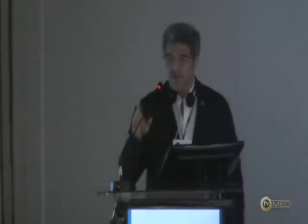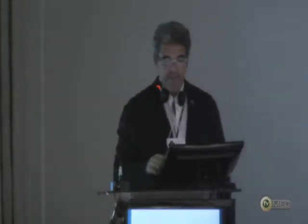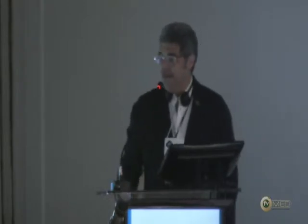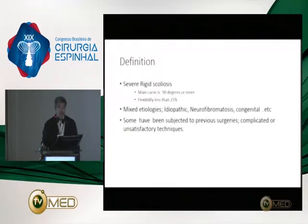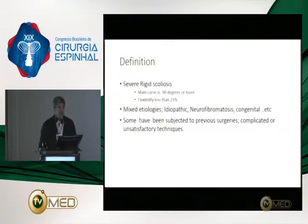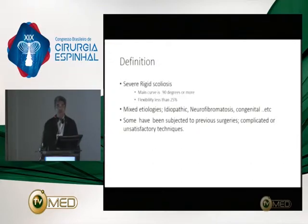Thank you very much Mr. Chairman. Good evening — I have no disclosures. Severe rigid scoliosis is best defined as a curve above 90 degrees that also has a flexibility of less than 25%. This is a group of patients who have a deformity of various etiologies.